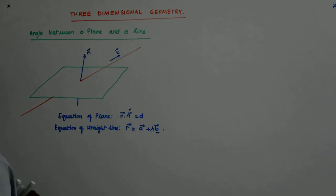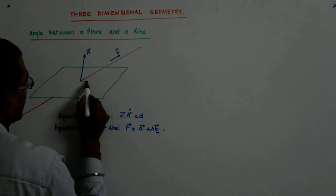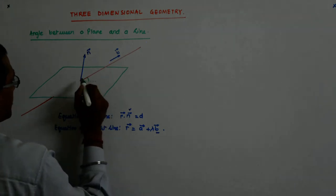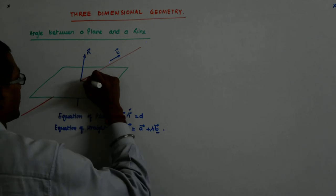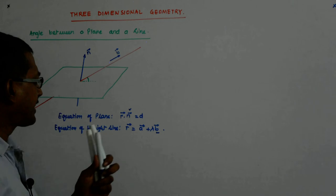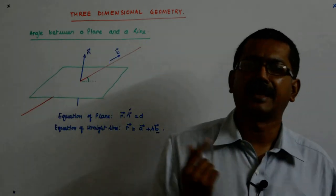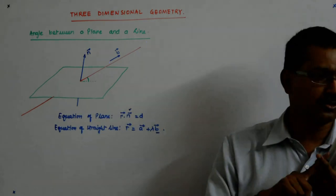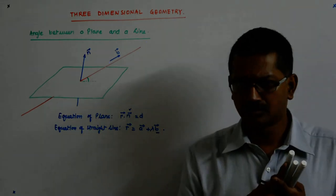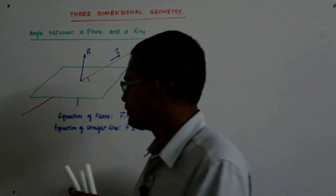Now, how will I define the angle between the plane and the line? I'll define it like this. Now, you'll see, I am quite capable of finding out the angle between the normal and the line, right? Because both of these vectors I know. I know those vectors.